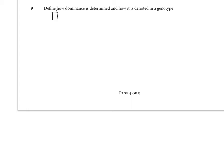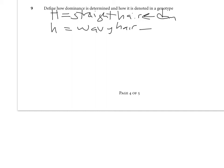Take hair type as an example. How do we know that capital H, which is straight hair in the universe created for this class, and lowercase h produces wavy hair, and that capital H is dominant and lowercase h is recessive?